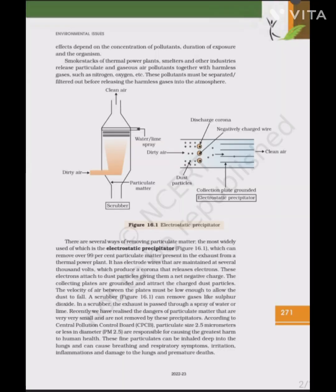Smoke stacks of thermal power plants, smelters and other industries release particulate and gaseous air pollutants together with harmless gases such as nitrogen and oxygen. These pollutants must be separated or filtered out before releasing the harmless gases into the atmosphere. The most widely used method of removing particulate matter is the electrostatic precipitator (Figure 16.1), which can remove more than 99% of the particulate matter from exhaust. It has electrode wires maintained at several thousand volts, producing a corona that releases electrons. These electrons attach to dust particles, giving them a net negative charge. The collecting plates are grounded and attract the charged dust particles. The velocity of air between the plates must be low enough to allow the dust to fall.